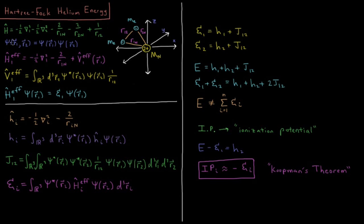Our wave function is a function of the three Cartesian coordinates of electron 1 and electron 2, making it a six-dimensional function. We approximate this as the product of two independent three-dimensional functions, one depending on the coordinates of each electron. These individual one-electron functions are called orbitals.